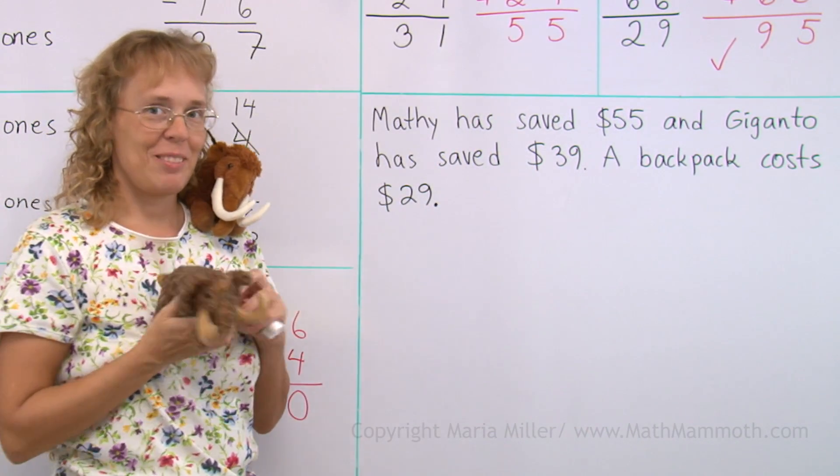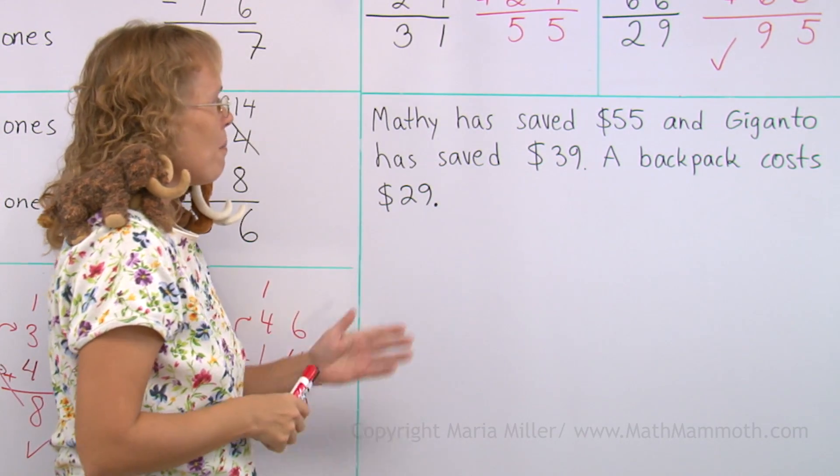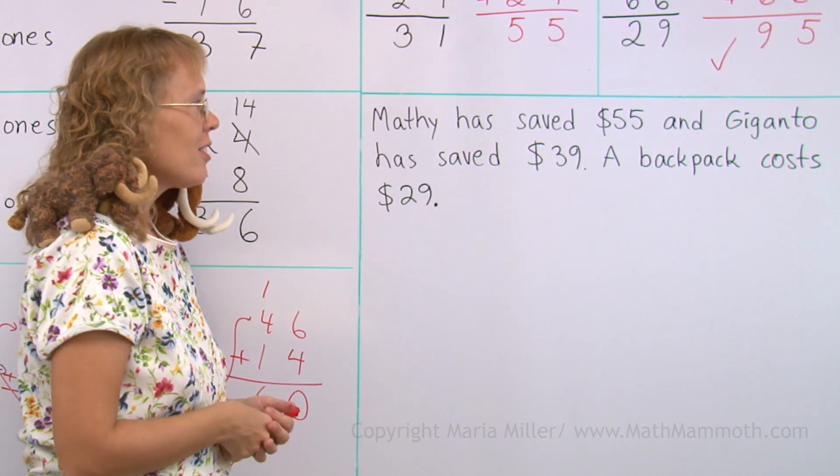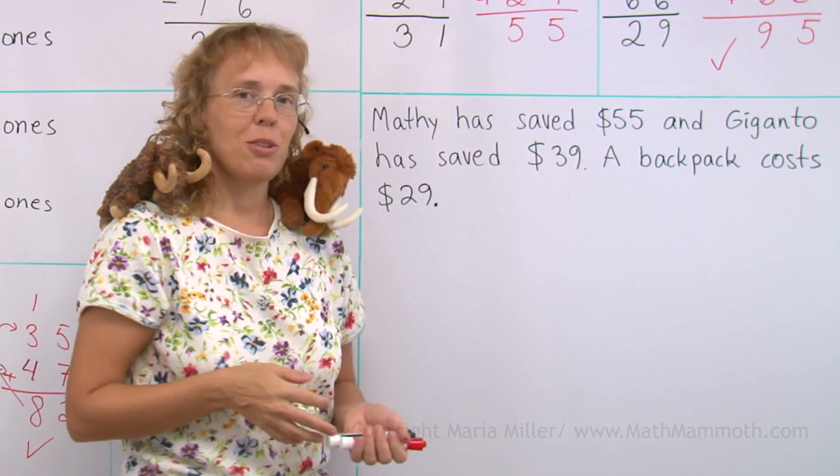Giganto is Matthew's cousin. Okay, go on my shoulder if you can stay there. Matthew has saved $55 and Giganto has saved $39. A backpack costs $29.